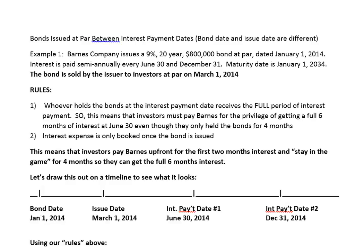We have Barnes Company who's issuing the bonds to investors. To issue a bond means to sell it. They're going to pay investors 9% interest over a 20-year period, and the par value of the bond is $800,000. The bond is dated January 1st. Interest is paid twice a year, June 30th and December 31st. And the maturity date, because it's a 20-year bond, is going to be January 1st, 2034.